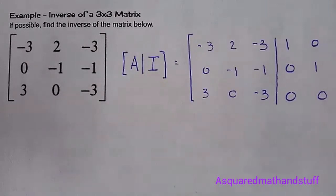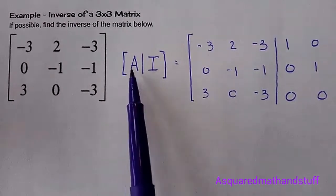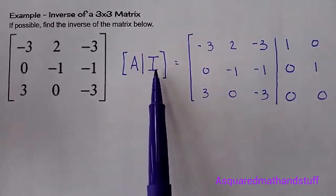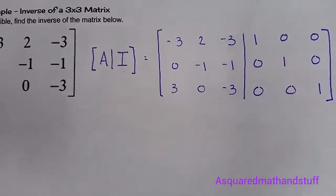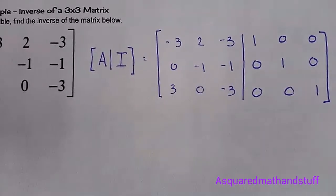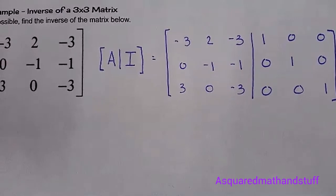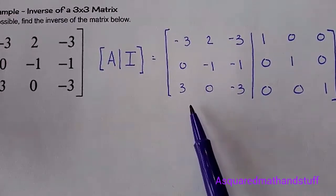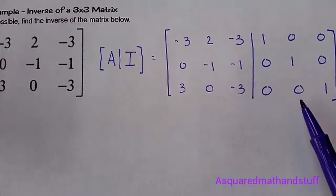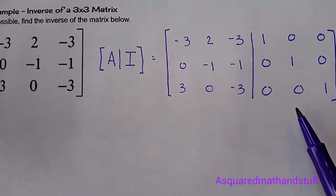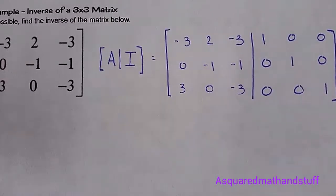In order to set it up with our double augmented matrix, it looks like this because we use our given matrix on the left, the identity matrix on the right. We are looking to apply elementary row operations to get the left-hand side to be the identity matrix, and the right-hand side will end up being our inverse matrix. So let's go ahead and begin that process.